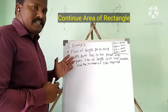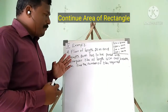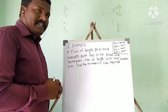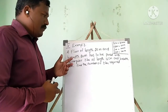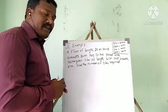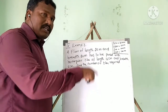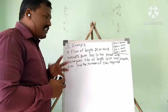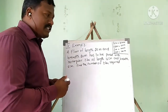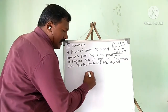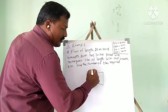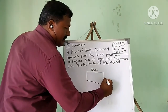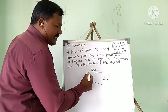Okay students, let me see another example — Example 3. Listen carefully. The floor has a length of 25 meters and a breadth of 20 meters. Now we have to find out how many tiles are required for the given floor. I will draw a simple diagram: 25 meter length and 20 meter breadth.